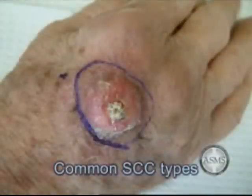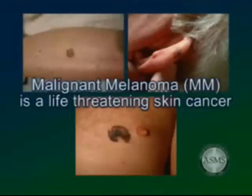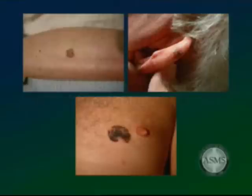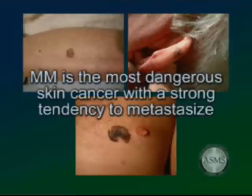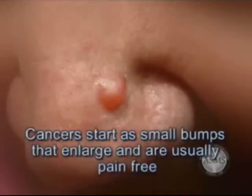SCC often appears as a red nodule or rough scaling patch. Malignant melanoma (MM) is a life-threatening skin cancer that develops from the pigment-forming cells in the skin. It often presents as a black or brown mole, but can also include other irregular colors such as red, white, blue, and gray. Malignant melanoma is the least common of the three types of skin cancers, but it is the most dangerous because it has a strong tendency to metastasize to distant organs.